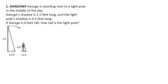We're given this information — George is standing next to a light pole in the middle of the day. George's shadow is 1.5 feet, and the light pole's shadow is 4.5 feet. If George is 6 feet tall, how tall is the light pole? All we're doing is setting up proportions. The way I'll do this is I'll do tall over shadow.